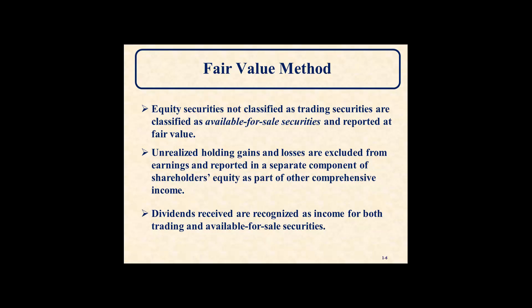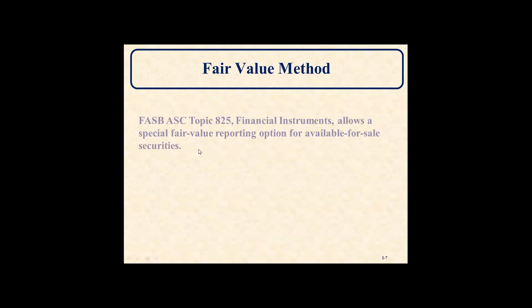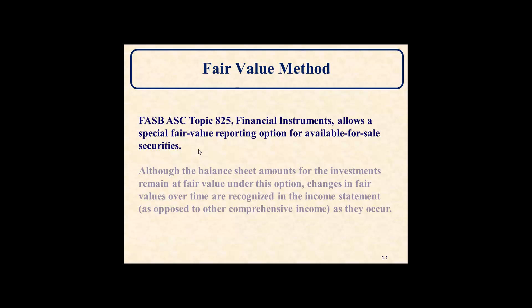For dividends under the fair value method, you would debit cash and credit dividend income. FASB ASC Topic 825 — Financial Instruments — allows a special fair value reporting option for available for sale securities. Although the balance sheet amounts remain at fair value under both options, changes in fair value over time are recognized in the income statement as they occur, as opposed to other comprehensive income. This is all about where you are reporting earnings; it doesn't change the fact that you are using the fair value method.